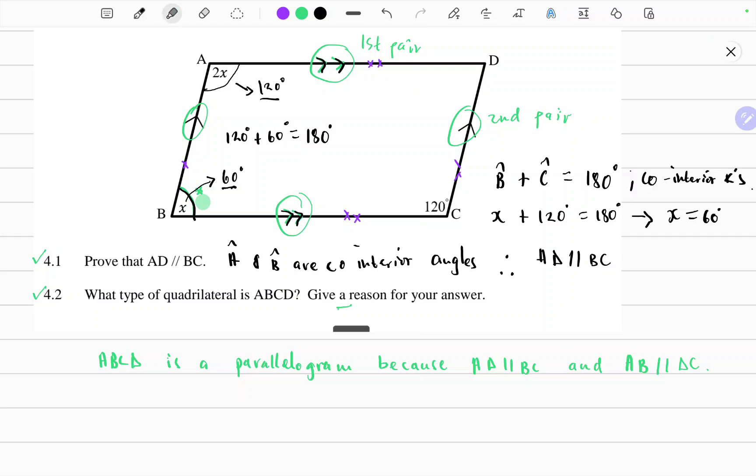Notice that angle A and angle C are both 120 degrees. So opposite angles, opposite interior angles of a parallelogram are equal. That could also be another reason. Thank you so much for watching.